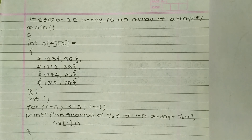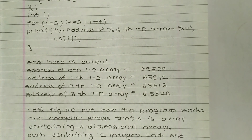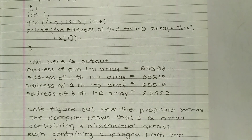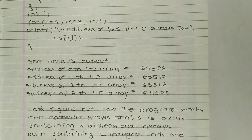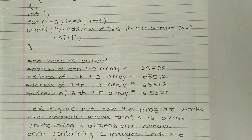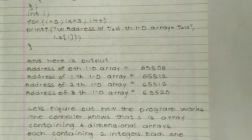We declare int i as an integer. In the for loop, i is equal to zero, i is less than or equal to three, i plus plus. We use printf to print: 'address of %d 1D array = %u', with arguments i and s[i].